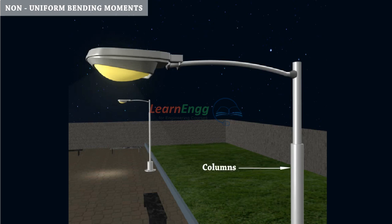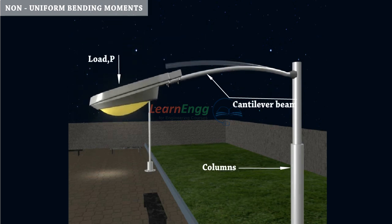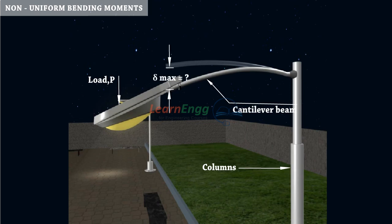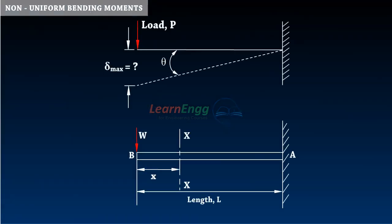Columns, cantilever beam, concentrated load at the end. Load P acting down. Now see the free body diagram of cantilever with concentrated load at the end.